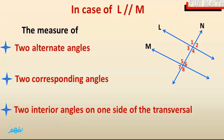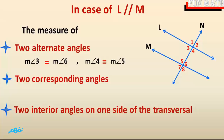After measuring, can I ask you: what is the relation between the alternate angles? What is the relation between the corresponding angles? What is the relation between the interior angles on one side of the transversal? For the alternate angles, we find measure of angle 3 is equal to measure of angle 6, and measure of angle 4 is equal to measure of angle 5.